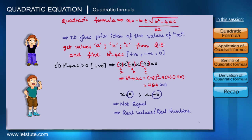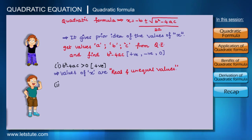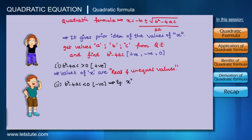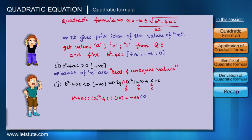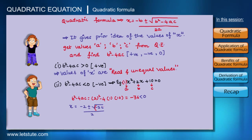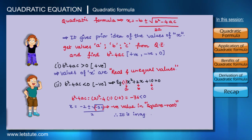Now, what if b² minus 4ac is less than zero — that is, negative? Let's take the quadratic equation x² plus 2x plus 10 equals 0, giving a equals 1, b equals 2, and c equals 10. Here, b² minus 4ac equals minus 36. Applying the quadratic formula, we get x equals minus 2 plus or minus square root of minus 36, divided by 2. Since we have a negative value under the square root, the values of x are distinct and not real — they are imaginary.